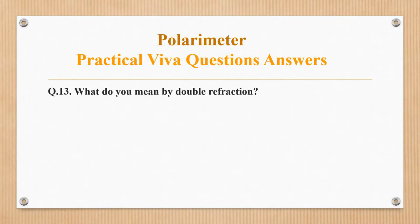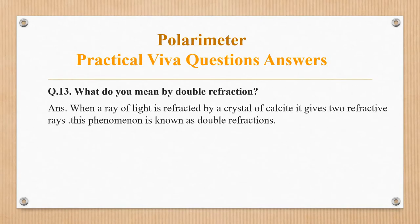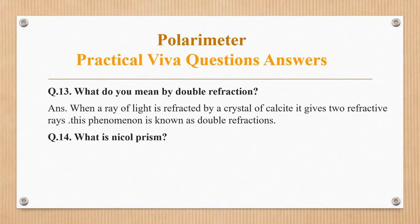What do you mean by double refraction? When a ray of light is refracted by a crystal of calcite, it gives two refracted rays. This phenomenon is known as double refraction. Nicol prism is an optical device made from a calcite crystal used to produce and analyze plane polarized light, exploiting the double refraction phenomenon.